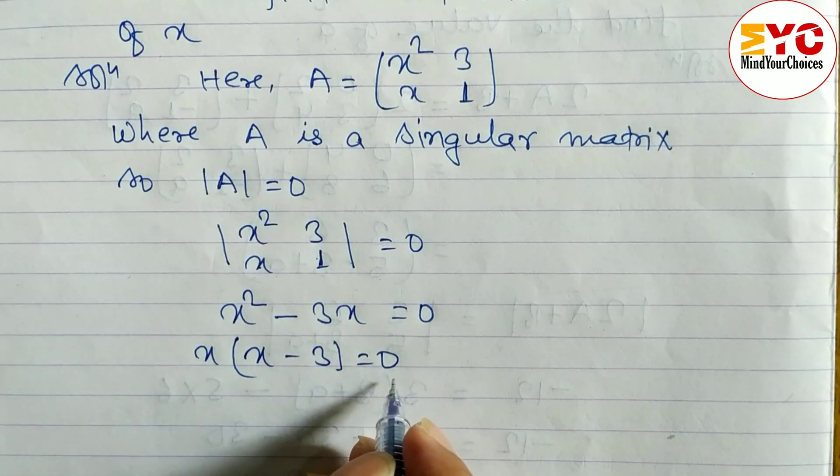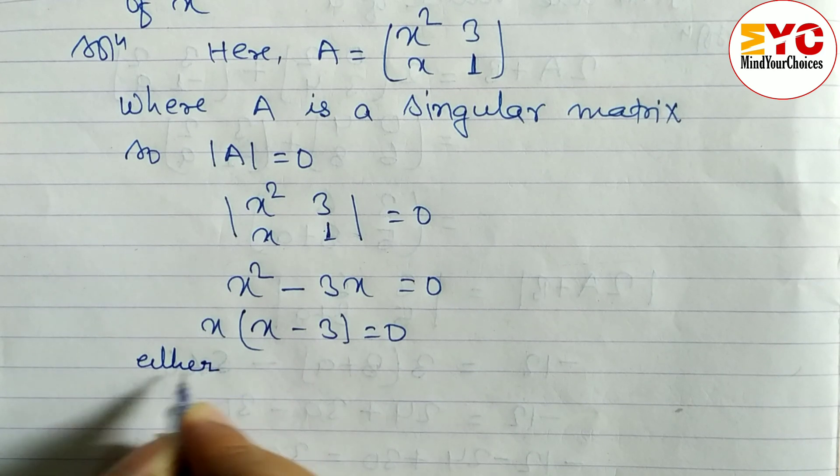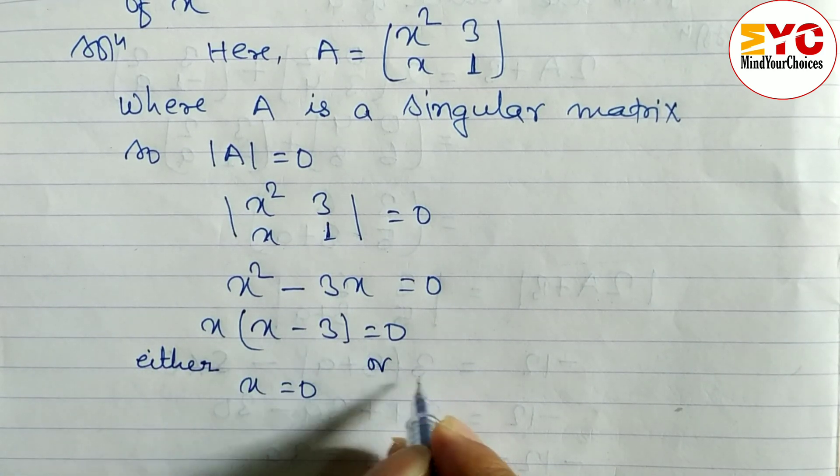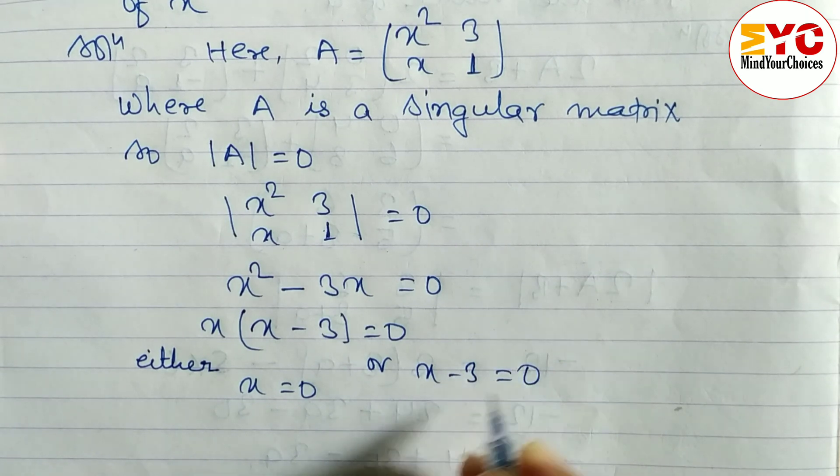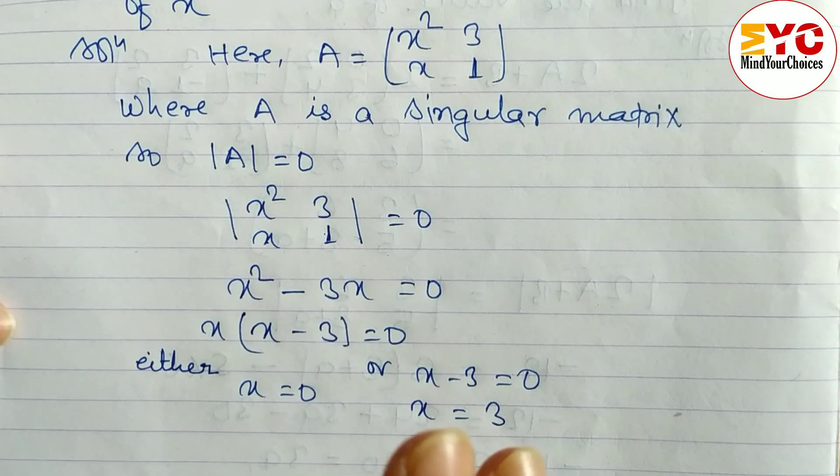We have to find out the value of x, so we take either x equals 0, or x minus 3 equals 0, which means x equals 3. Hope you understand this question. We had to find out the value of x.